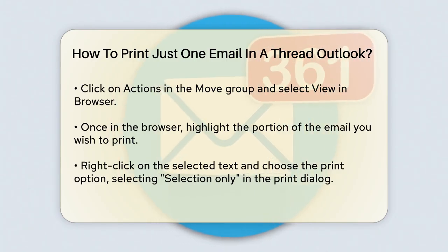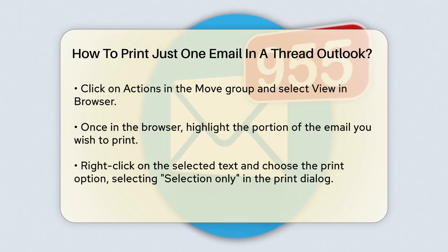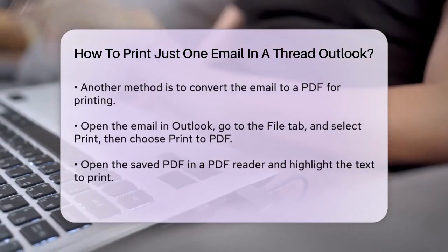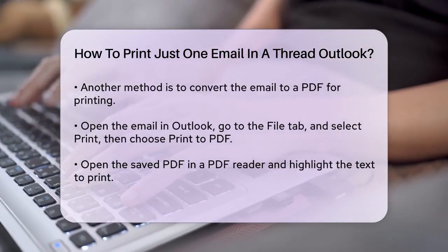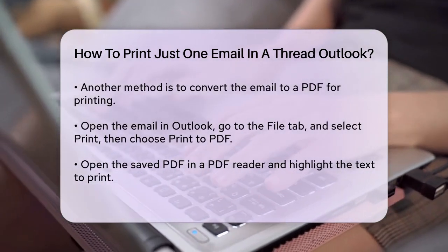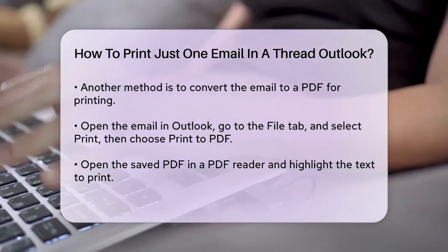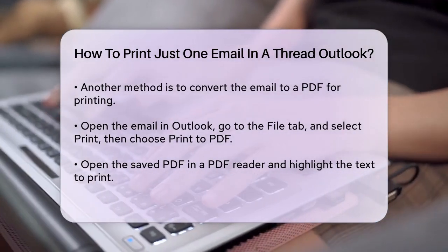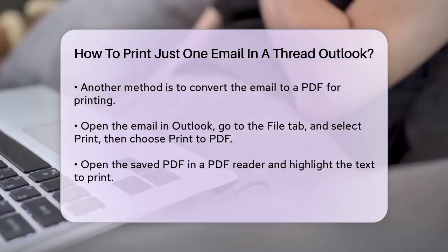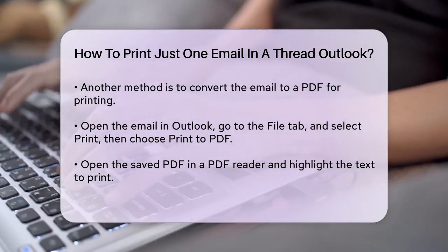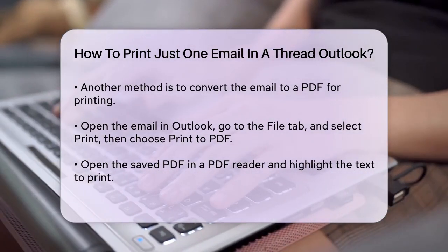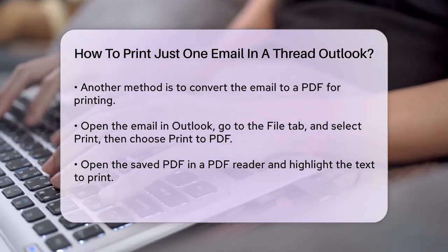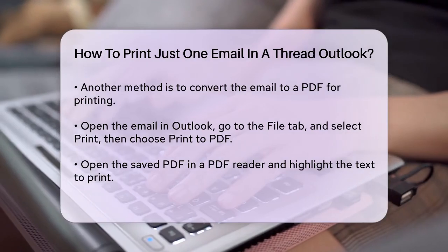Another approach is to convert the email to a PDF and then print the desired section. Open the email in Outlook and go to the File tab. Select Print, then choose Print to PDF to convert the email into a PDF file. Open the PDF file in your preferred PDF reader. Highlight the text you want to print, then use the Print menu in your PDF reader to select the 'Print Selection' option. This way, you can print only the part of the email that you need.